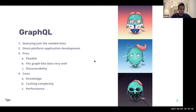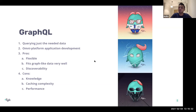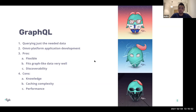GraphQL also offers flexibility in terms of discoverability — it comes with almost automatic documentation. The way you construct it requires you to create a schema upfront, and that schema gives you a form of documentation on its own. You can have extended documentation as well, but there is an automated baseline that works for most GraphQL schemas.